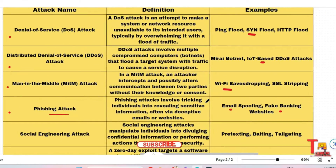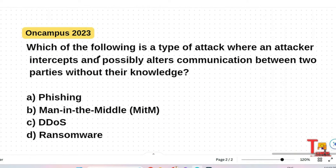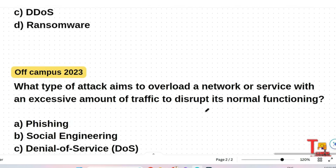Let's see the questions — this will make things more clear. Question: Which of the following is a type of attack where an attacker intercepts and possibly alters communication between two parties without their knowledge? Options: phishing, man in the middle, DDoS, or ransomware. The answer is Man in the Middle, or MITM attack.